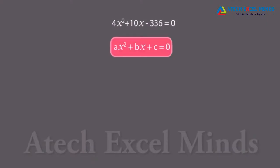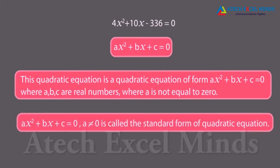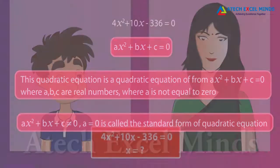This is a quadratic equation of the form ax² + bx + c = 0, where a, b, c are real numbers and a ≠ 0. Any equation of the form P(x) = 0, where P(x) is a polynomial of degree 2, is a quadratic equation: ax² + bx + c = 0, where a ≠ 0.